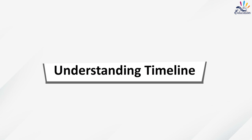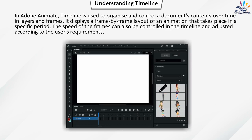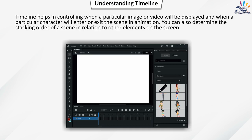In Adobe Animate, the timeline is used to organize and control a document's contents over time in layers and frames. It displays a frame-by-frame layout of an animation that takes place in a specific period. The speed of the frames can be controlled and adjusted according to the user's requirements. The timeline helps control when a particular image or video will be displayed and when a character will enter or exit the scene.